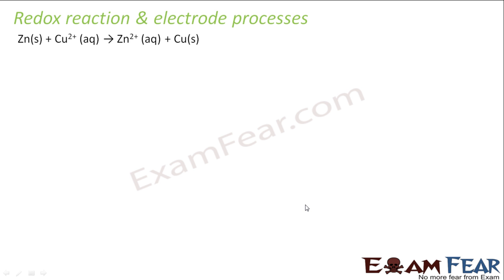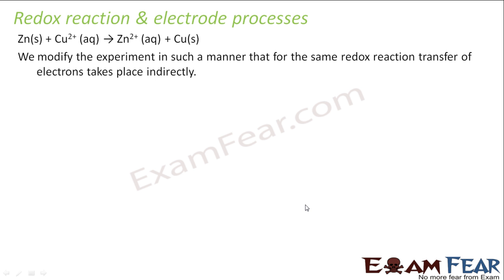Now we'll discuss Redox Reaction in Electrode Process. We have seen this kind of reaction. Zn(s) + Cu²⁺(aq) → Zn²⁺(aq) + Cu(s). What if you want to divide this reaction? What we do is this experiment in an indirect manner. So the process of transfer of electron takes place in the indirect manner. Here is the direct transfer.